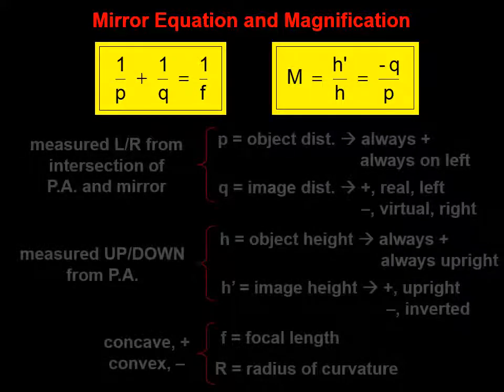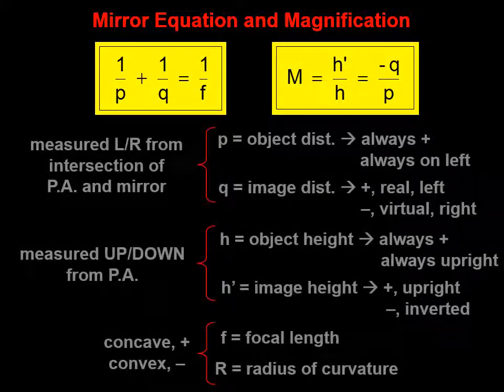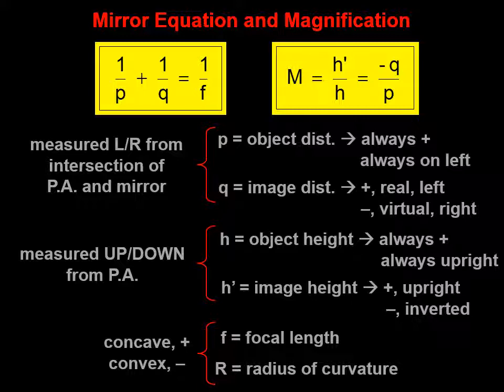There are two equations that we are going to use in this lesson, and here they are. The mirror equation: 1 over p plus 1 over q equals 1 over f, and the magnification equation: m is equal to h prime over h, which is also equal to opposite q over p.